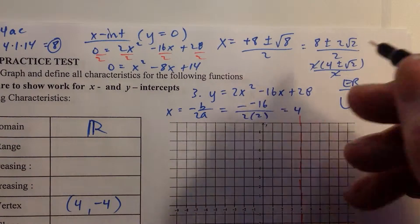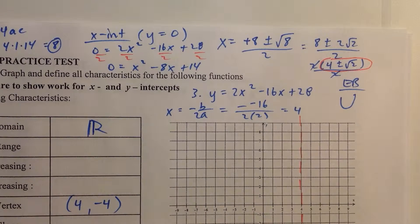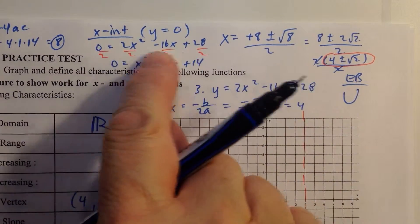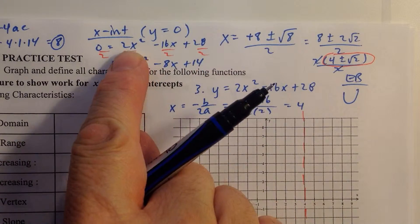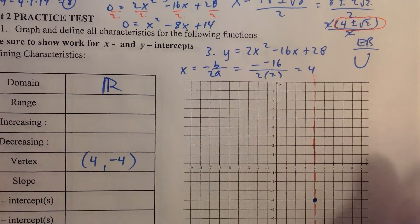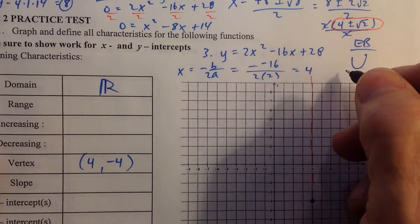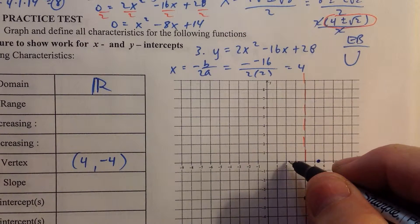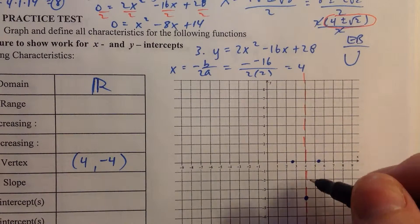That's those two values that make up our x-intercepts. That's what we just found. And to remind you, the zeros of the function, or the zeros of the equation, are the x-intercepts for the function. So the solutions to this equation represent the x-intercepts of the function. And so 4 plus or minus radical 2. Radical 2 is about 1.3, so 4 plus 1.3 is about 5.3. 4 minus 1.3 is about 2.7. And so those would be our two x-intercepts.